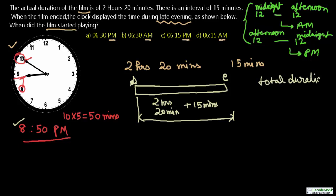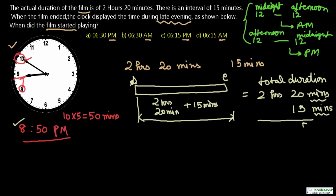The total duration for which you sit inside the cinema hall is 2 hours 20 minutes plus 15 minutes. We add the minutes together — 20 minutes plus 15 minutes equals 35 minutes. Only the same units can be added, so we add minutes to minutes. The result is 2 hours 35 minutes total.